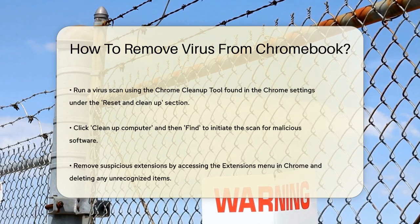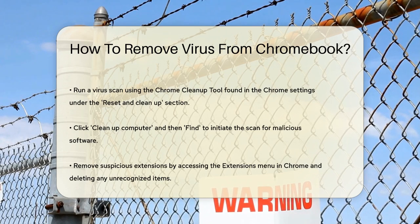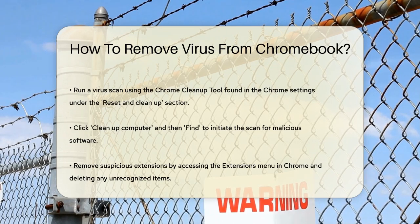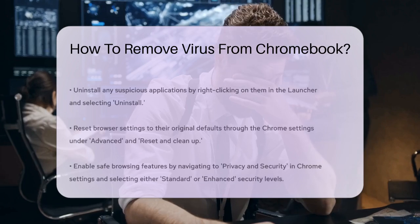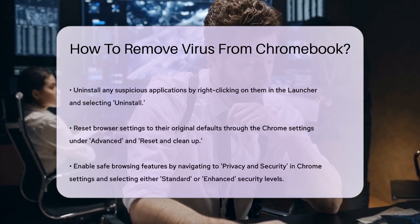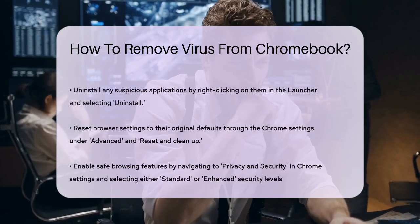Another important step is to remove any suspicious extensions or apps. Open Chrome, click the three dots in the top right corner, go to Extensions, and manage your extensions. Remove any that you don't recognize or that you haven't installed. If you've installed any suspicious applications, it's time to uninstall them. Click on the launcher at the edge of the screen, right-click on the application you want to remove, and select Uninstall.